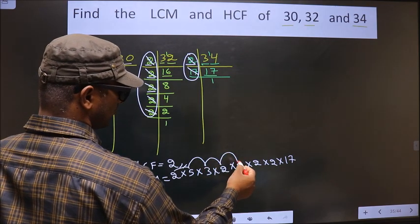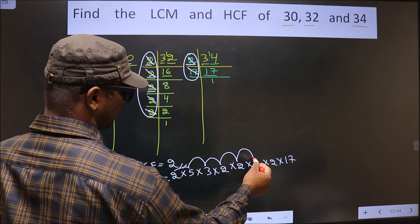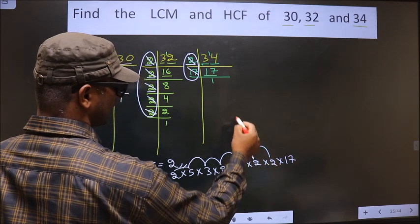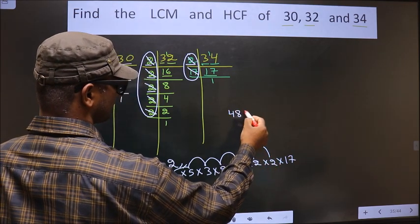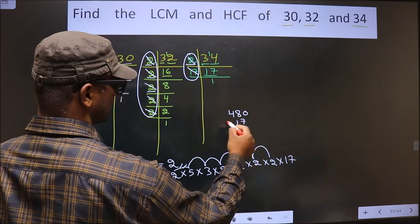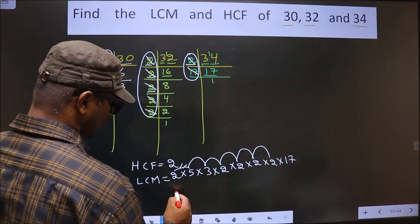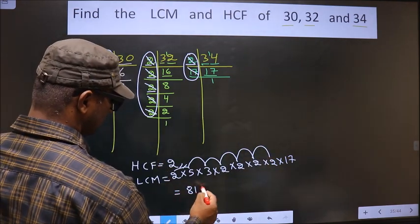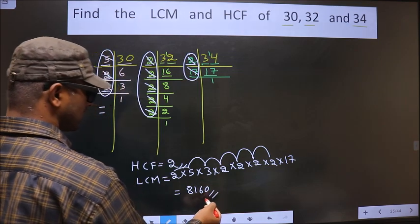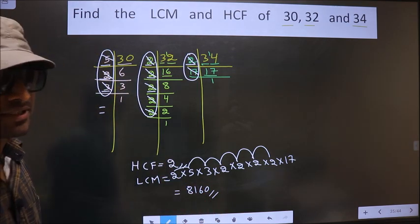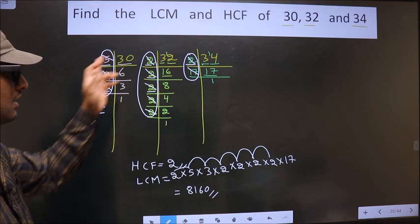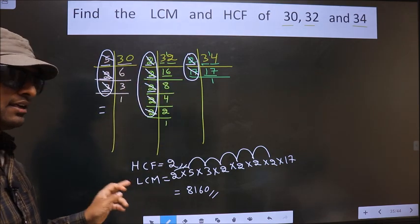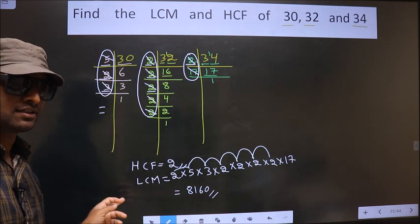Into 2, 120. Into 2, 240. Into 2, 480. Into 17 we should do. So now you get 8160. So this is our LCM and this is our HCF. Am I clear?